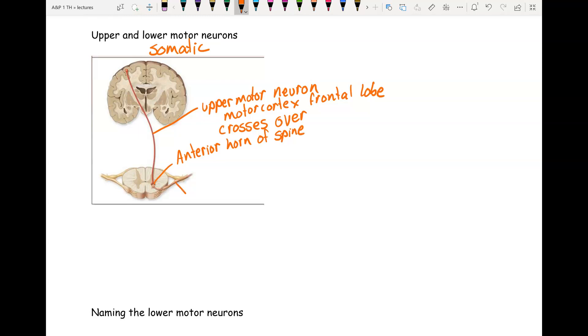There it synapses with the lower motor neuron. And then the axon goes out through the anterior root to your skeletal muscle. So the basic setup of motor commands is an upper motor neuron from the brain to the spine, it synapses with a lower motor neuron that goes from the spine to the effector. So you have the upper is brain to spine, and then you have the lower is spine to effector.